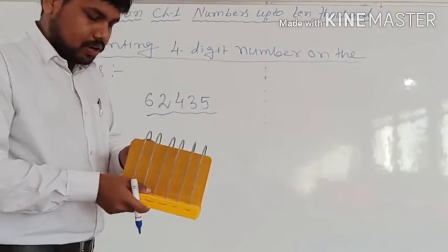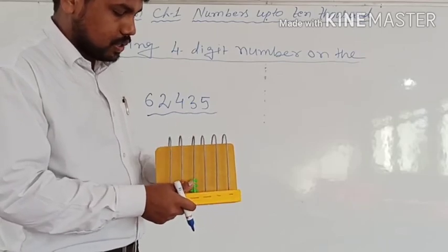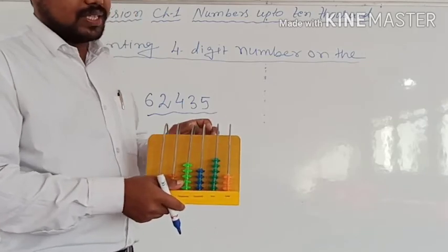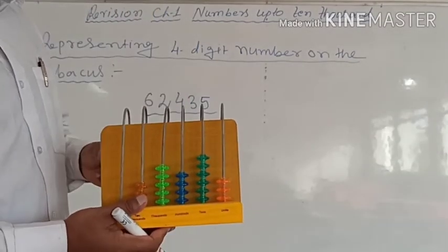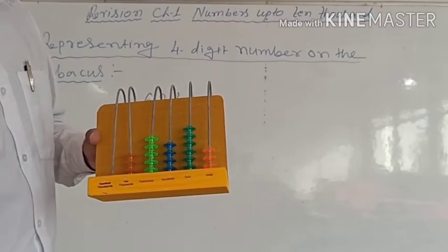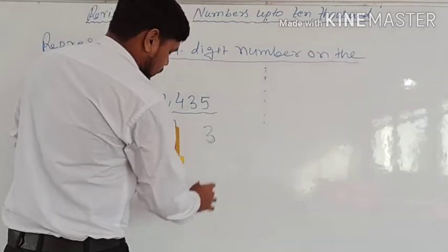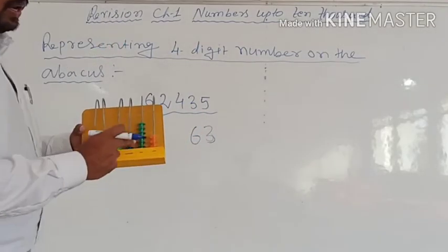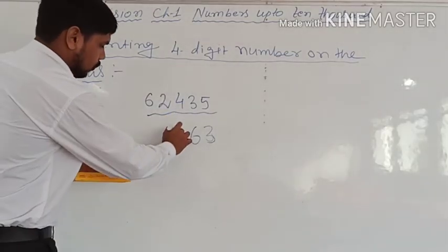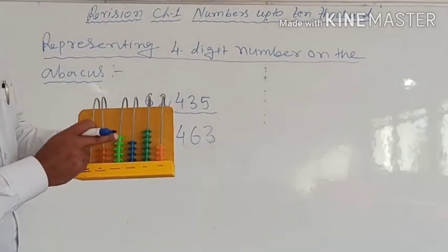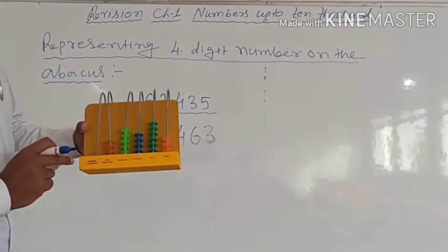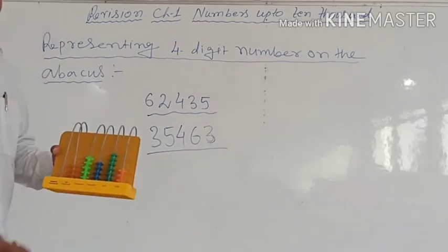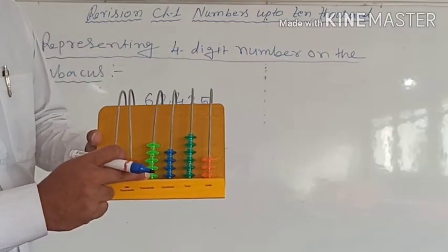Now the opposite: suppose a number is already represented on the abacus and you have to tell what number it is. Check each place: ones place has 3, tens place has 6, hundreds place has 4, thousands place has 5, and ten-thousands place has 3. So we read: thirty-five thousand, four hundred, sixty-three — 35,463.